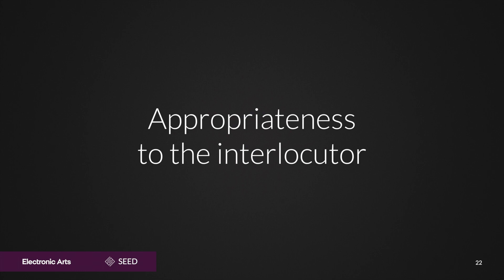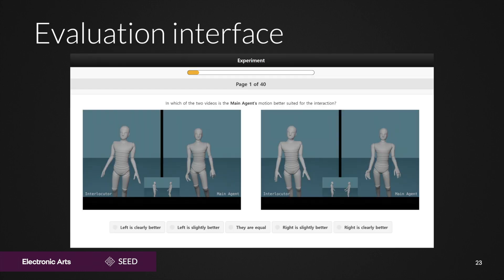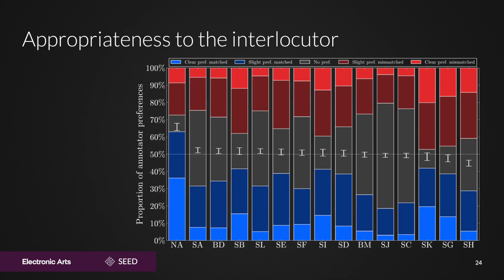The third dimension evaluated in the challenge was gesture appropriateness to the conversation partner. Here, we again compared the output of each system to a deliberate mismatch. This time, the mismatched clips had their generated gestures based on different behavior for the conversation partner. Most of the systems scored barely above the 50% threshold. Clearly, appropriateness to the conversation partner is even further from being a solved problem.